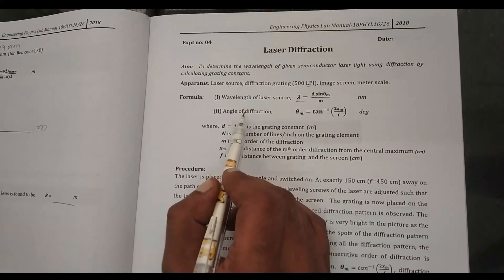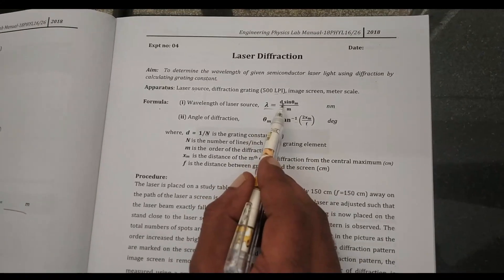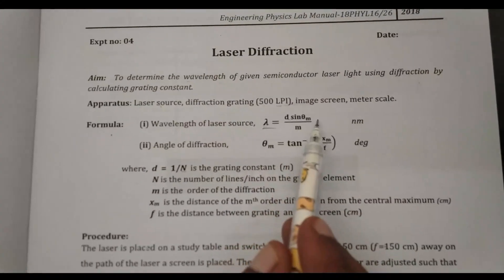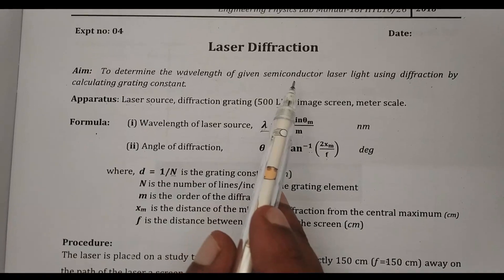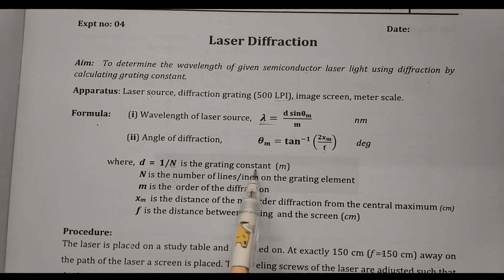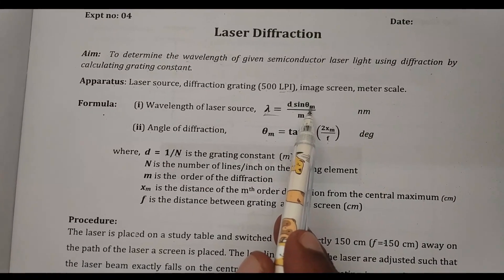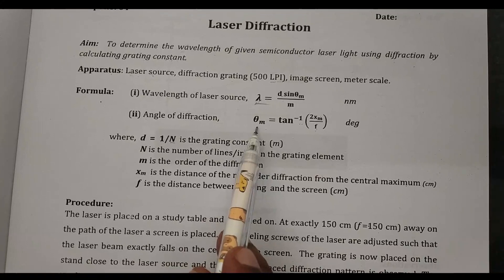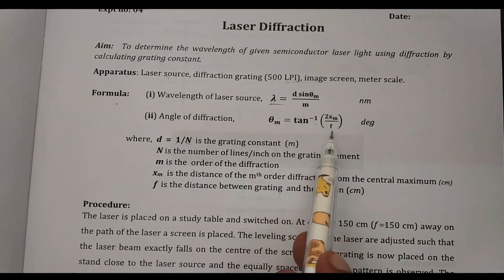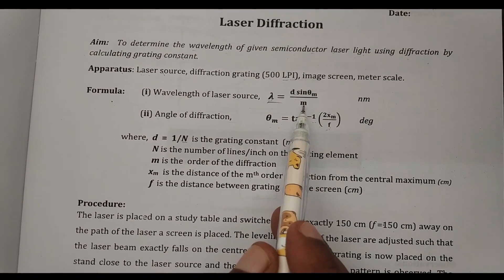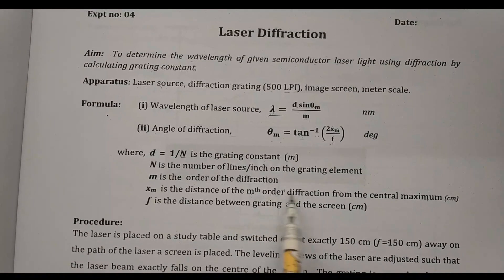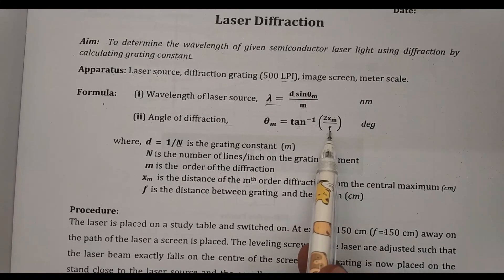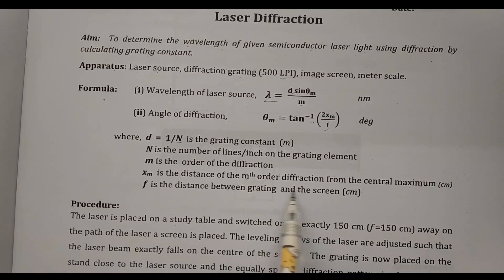In this experiment we find the wavelength using the formula: lambda = d × sin(theta_m) / m, where lambda is the wavelength, d is the grating constant, and theta is the diffraction angle calculated as theta = tan⁻¹(2x_m / f). Here m is the order of diffraction, x_m is the distance of the mth order from the central maximum, and f is the distance between the grating and the screen.